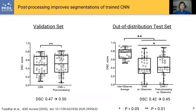This is also supported quantitatively, where we saw that post-processing significantly improved the dice score of CNN segmentations in both the validation set, where the mean dice score increased from 0.47 to 0.50, and in the out-of-distribution test set, where the mean dice score increased from 0.42 to 0.45. While post-processing did improve CNN-only segmentations, dice scores from automated methods were lower than the mean inter-observer dice score of 0.73.